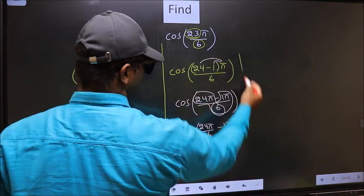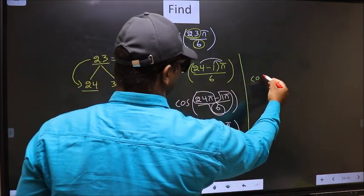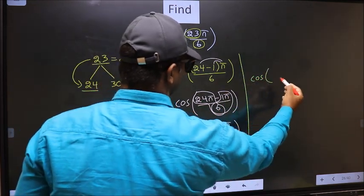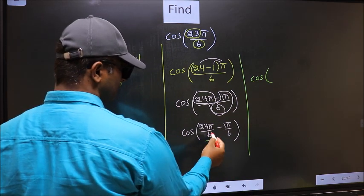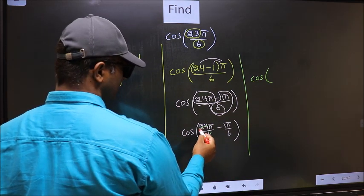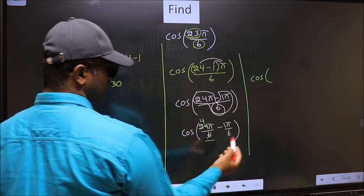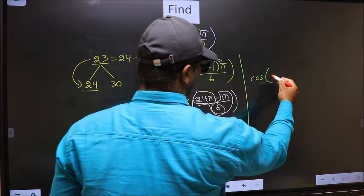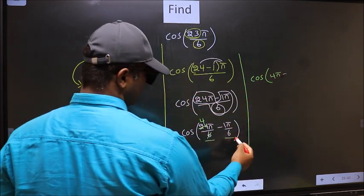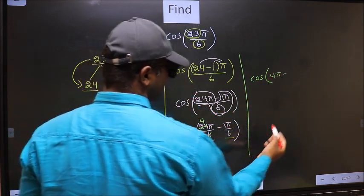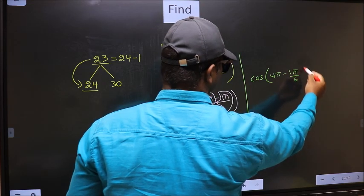Next, cos. Here you should cancel: 6 ones, 6 fours. So you get 4π. Minus this — no change — 1π/6.